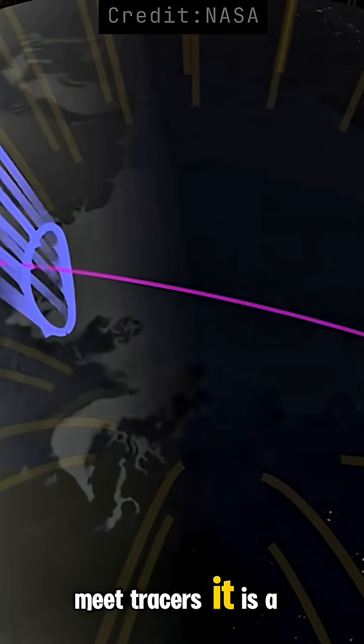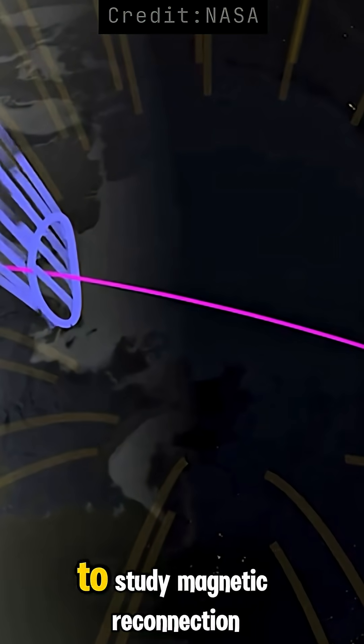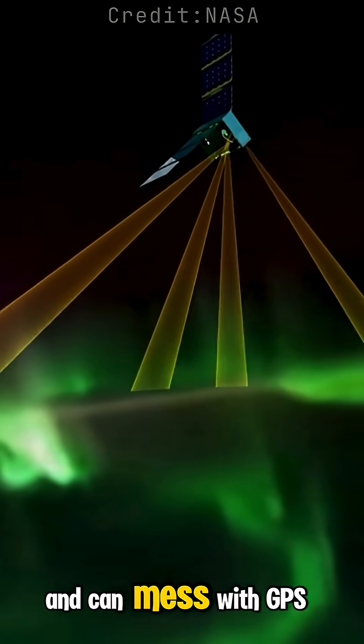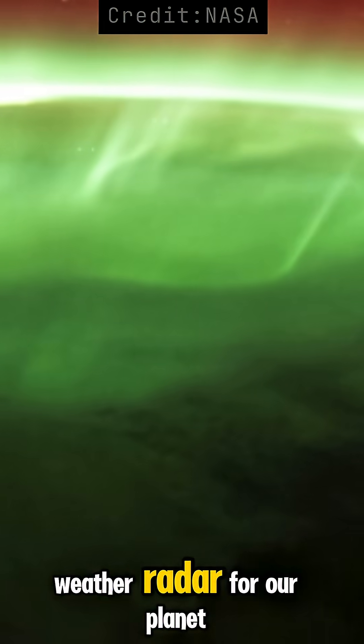Meet TRACERS. It is a pair of small satellites that fly through Earth's polar cusp to study magnetic reconnection, the process that powers auroras and can mess with GPS and power grids. Think of it as space weather radar for our planet.